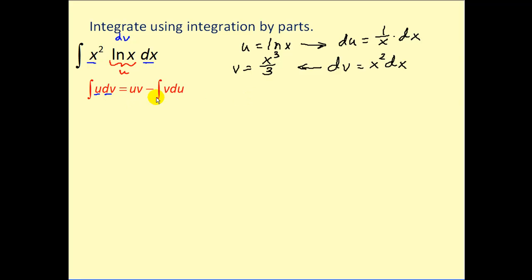Let's apply our integration by parts formula and see if this result will be easier to integrate. So we have u times v. The product of these two I'm going to rewrite as one-third x cubed natural log x minus the integral of v times du. So there's our v and du is equal to one over x dx.